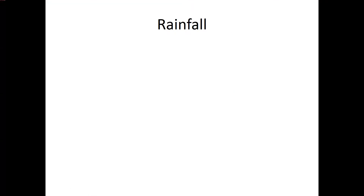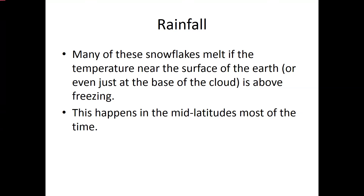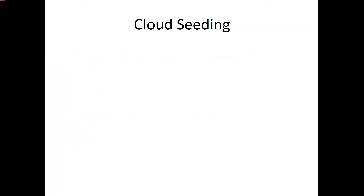Now let's talk about rainfall. Many of the snowflakes melt as they begin to fall towards the ground because the air near the ground is very warm. So much of the rain we actually get starts off as snow and then melts into rain. If the air between the cloud and the ground is all below freezing, it falls as snow. But even in the summertime, most of the rain we get starts out as snow.